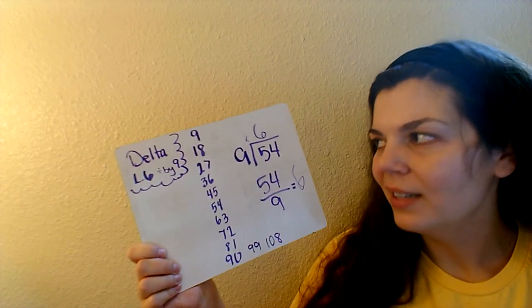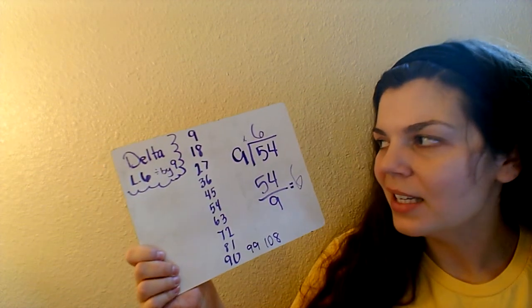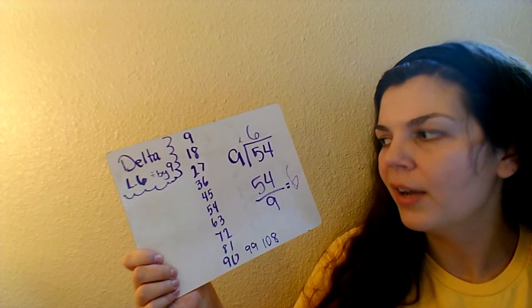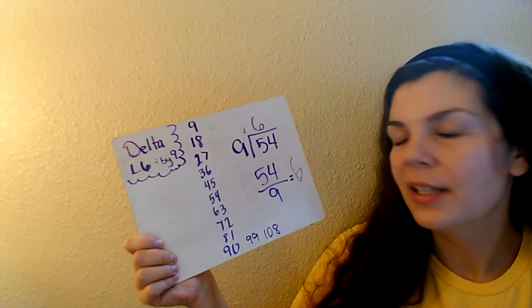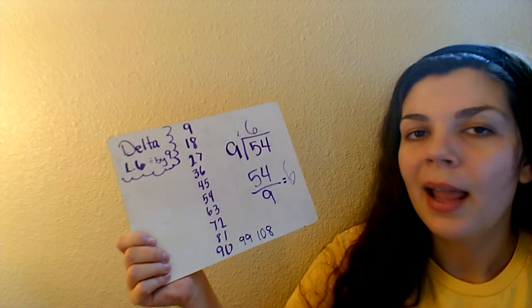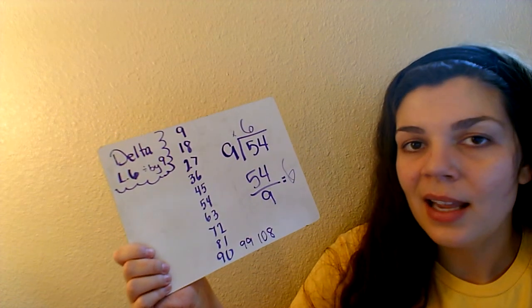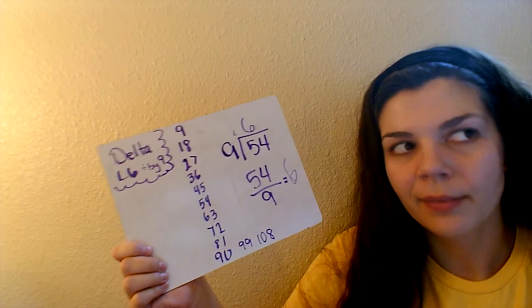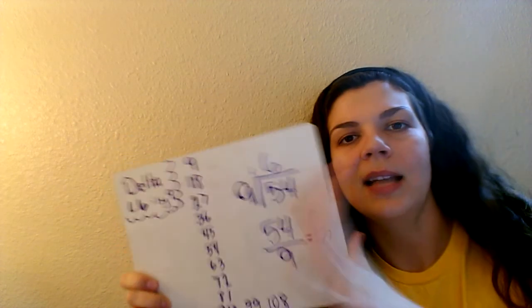9, 18, 27, 36, 45, 54, 63, 72, 81, 90, 99, and 108. Alright — Lesson 6, nines. You guys got it. Love you. Hope you guys had a great spring break, and I'll be checking in with you. Bye!